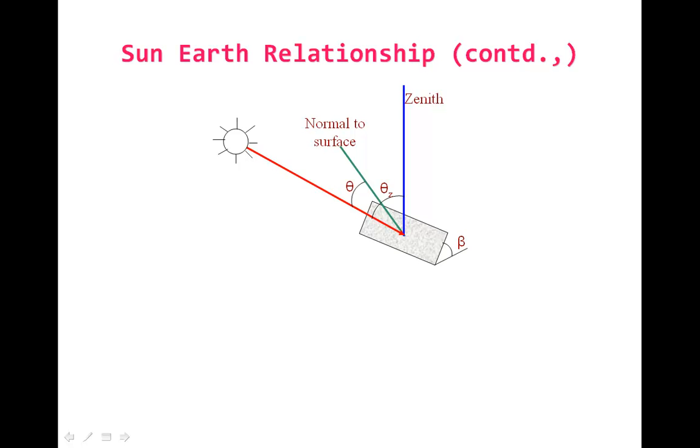For a special category, if beta is equal to 0, it can be considered theta becomes theta-Z.